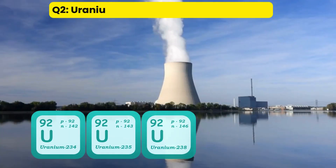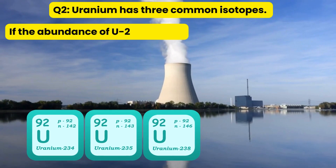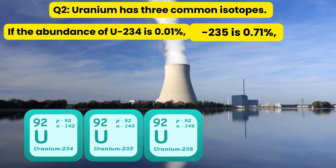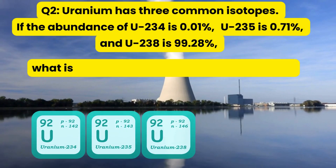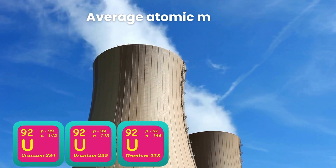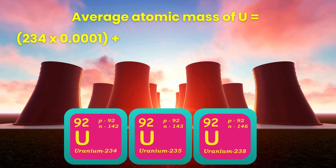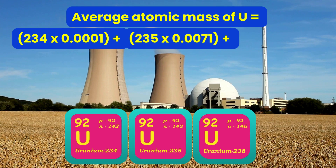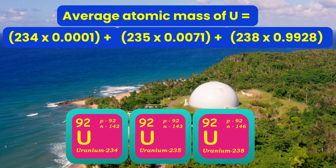Question 2: Uranium has three common isotopes. If the abundance of U-234 is 0.01%, U-235 is 0.71%, and U-238 is 99.28%, what is the average atomic mass of uranium? Average atomic mass of uranium equals 234×0.0001 plus 235×0.0071 plus 238×0.9928, which equals 237.98 AMU.